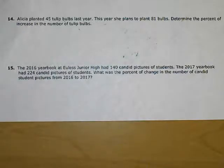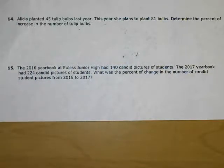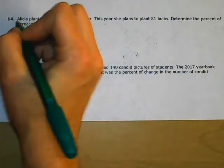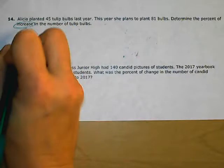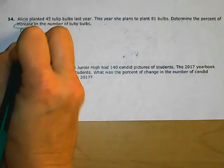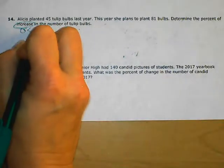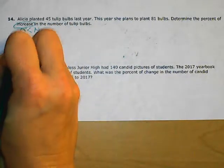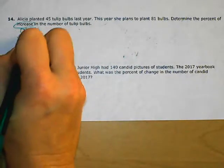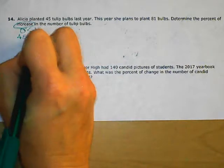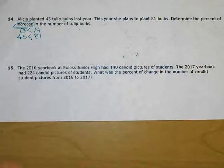Number 14: Alicia planted 45 tulip bulbs last year. This year, she plans to plant 81 bulbs. Determine the percent of increase in the number of tulip bulbs. Because it is an increase, we know that the original is going to be less than the new. Therefore, 45 is less than 81.